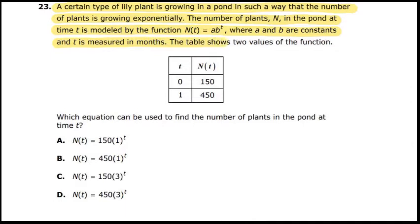The table shows two values of the function. So you see the table there, we have zero months is 150, one month is 450 plants. Which equation can be used to find the number of plants in the pond at the time t?